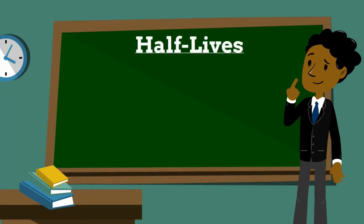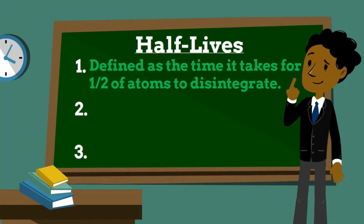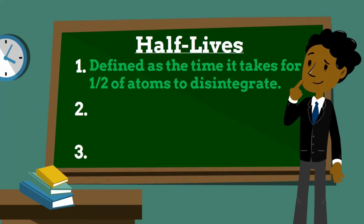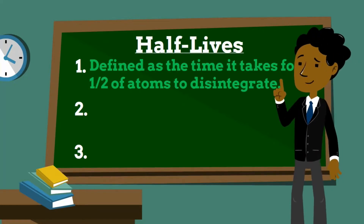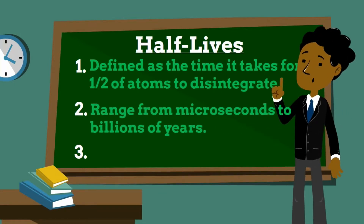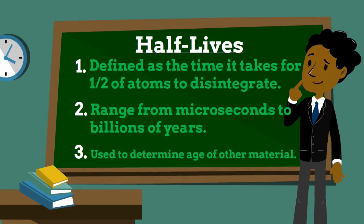Here are some brief facts regarding half-lives. The term half-life is defined as the time it takes for one half of the atoms of a radioactive material to disintegrate. Half-lives for various radioisotopes can range from a few microseconds to billions of years.